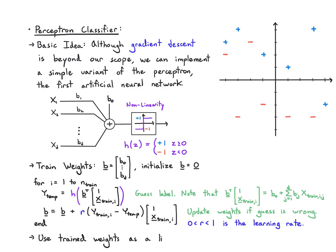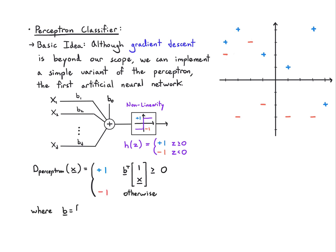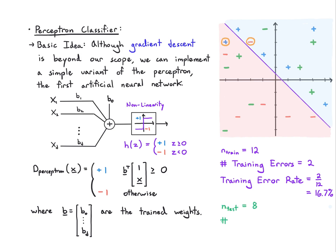After training, the weights b are used for linear classification: output +1 if b^T [1; x_vector] ≥ 0, and −1 otherwise. In this example run with learning rate 0.5, the perceptron made two training errors (2/12 = 16.7%) and two test errors out of eight (2/8 = 25%).